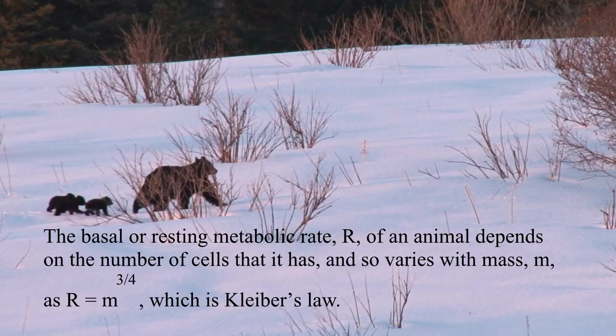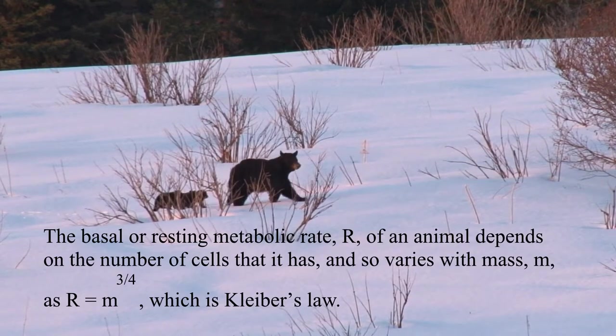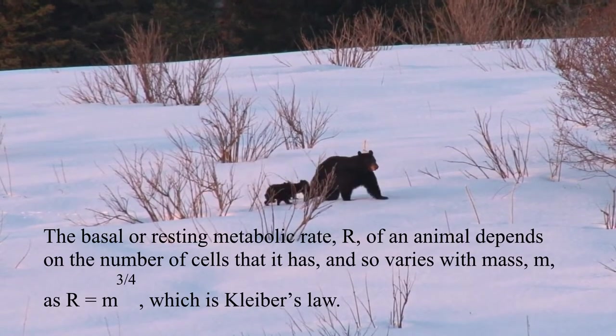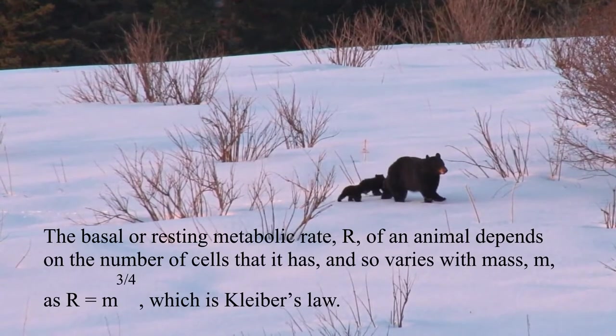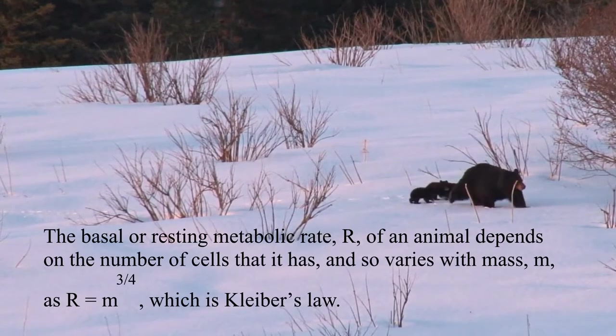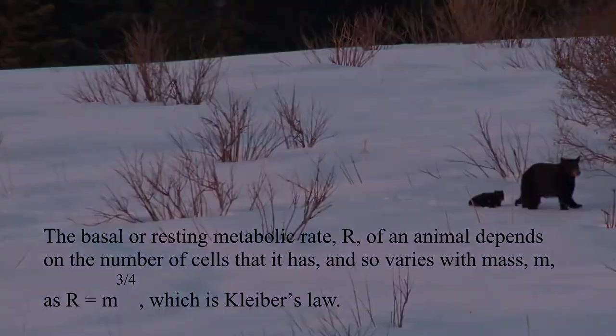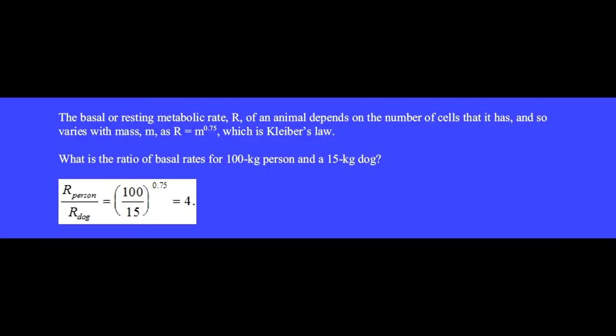The basal or resting metabolic rate R of an animal depends on the number of cells that it has and so varies with mass as R equals M to the three-quarter power, which is Kleber's law. What is the ratio of rates for a 100 kilogram person and a 15 kilogram dog? Please show that the ratio is 4.